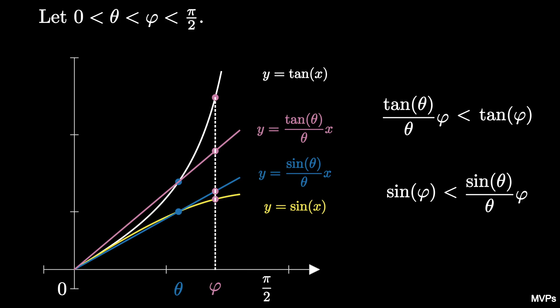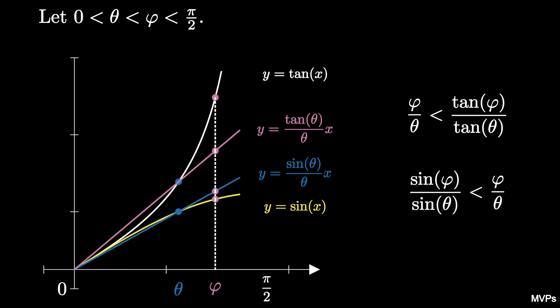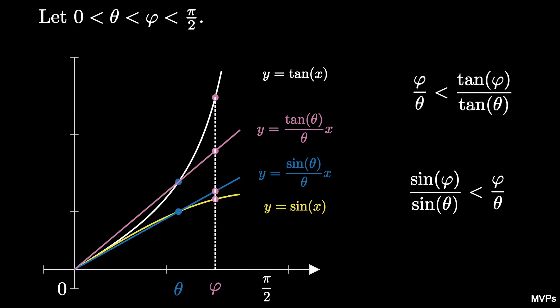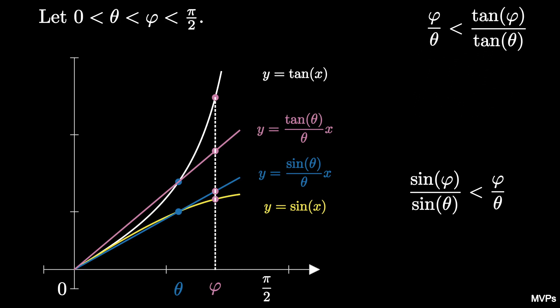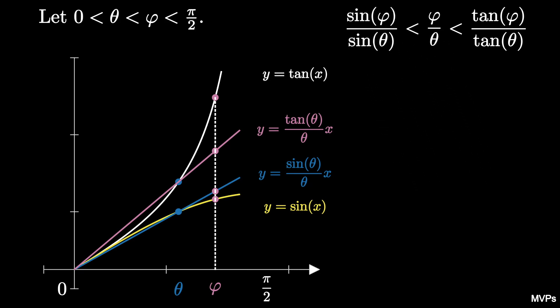We can divide the first inequality by the positive value sine of theta, resulting in sine of phi over sine of theta is less than phi over theta, and we can divide the second inequality by tangent of theta, resulting in phi over theta is less than tangent of phi over tangent of theta. Stringing these two inequalities together: sine of phi over sine of theta is less than phi over theta, which is less than tangent of phi over tangent of theta. This is known as Aristarchus's inequalities.